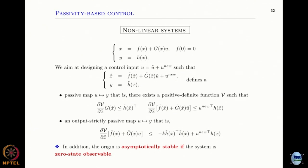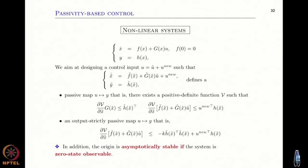For nonlinear systems, what we want to do is design u so that in closed loop you still have a passive system. The control input u should have one component that makes the system passive and another component — called u-new — from which you define your passive map. Otherwise, if you close the loop with just some function of the state and there is no new input, you cannot speak about passivity. You want V-dot to be less than or equal to the new input multiplied by the output.